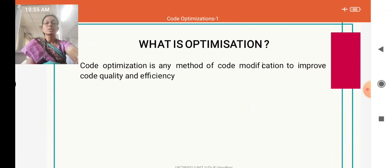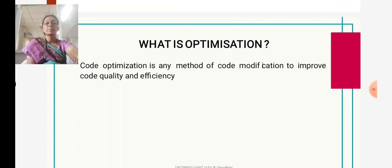We already know the phases of a compiler: lexical analyzer, syntax analyzer, semantic analyzer, intermediate code generation, code optimization, and code generation. Code optimization is an interface of the compiler. The input to code optimization is the three-address code, and the output is the optimized three-address code. We are going to reduce the three-address statements in an optimized way.